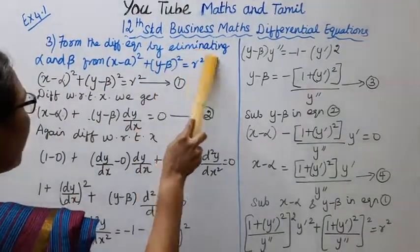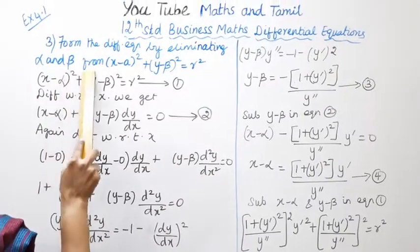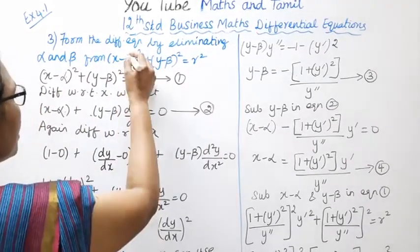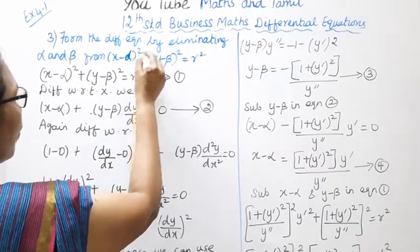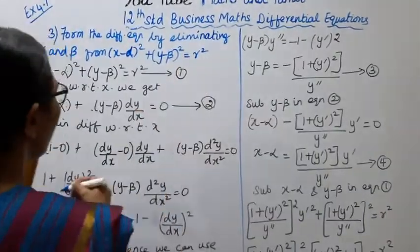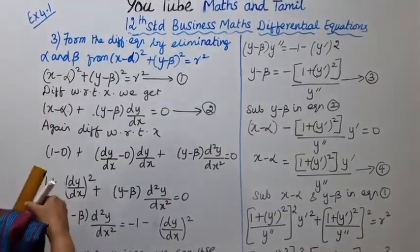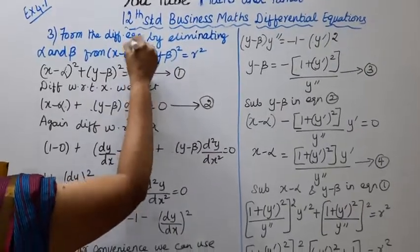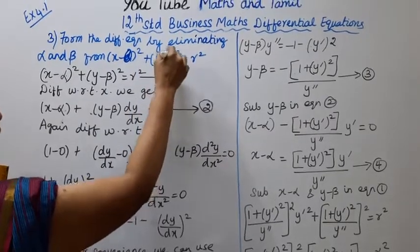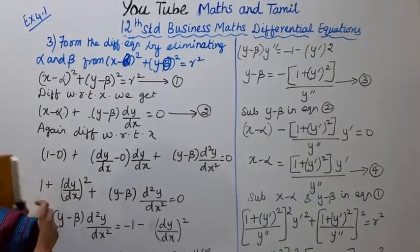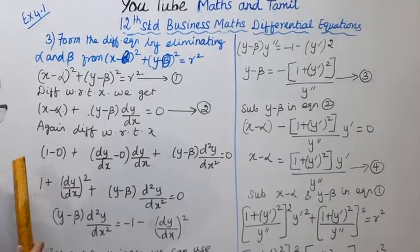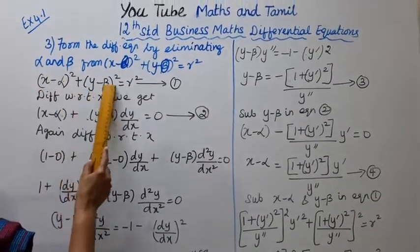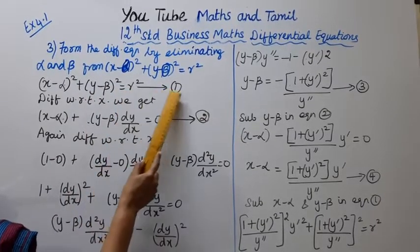Form the differential equation by eliminating alpha and beta from (x − alpha)² + (y − beta)² = r². We need to eliminate alpha and beta to form one differential equation. This is equation 1.